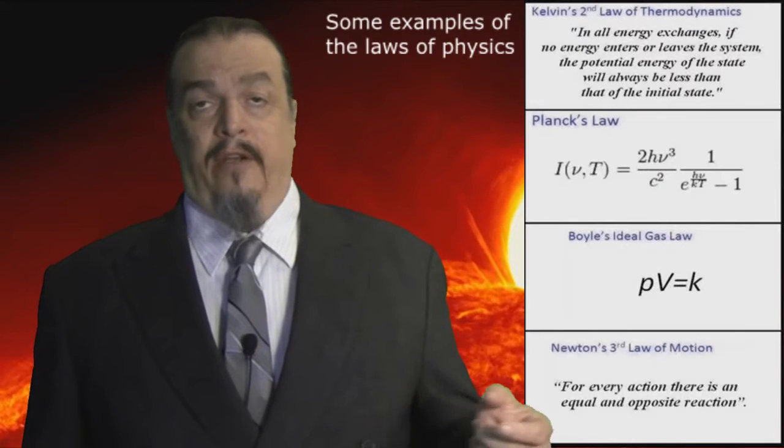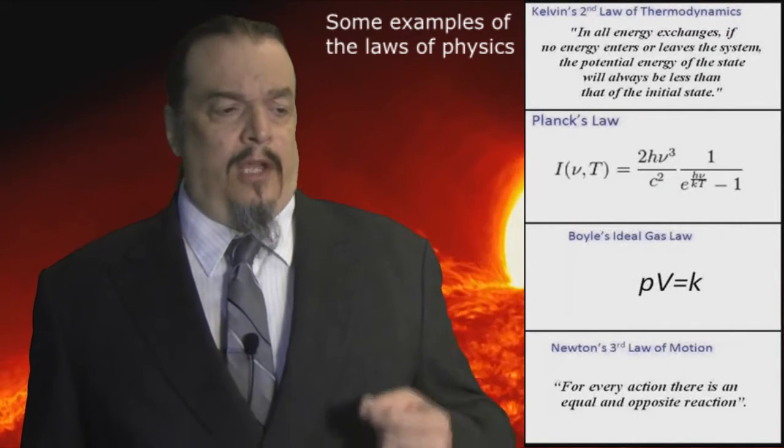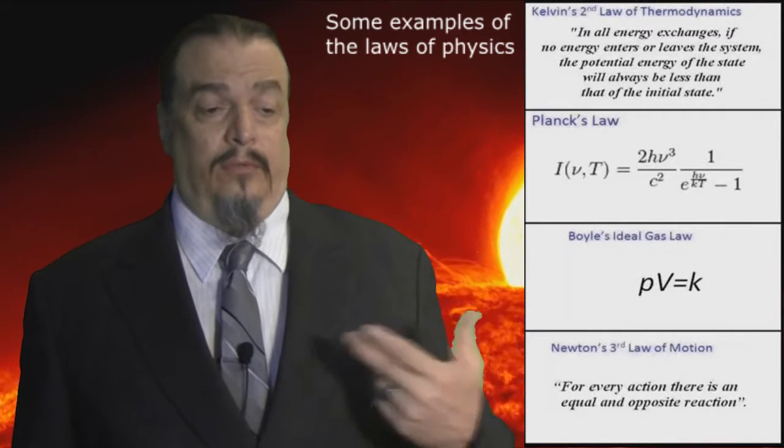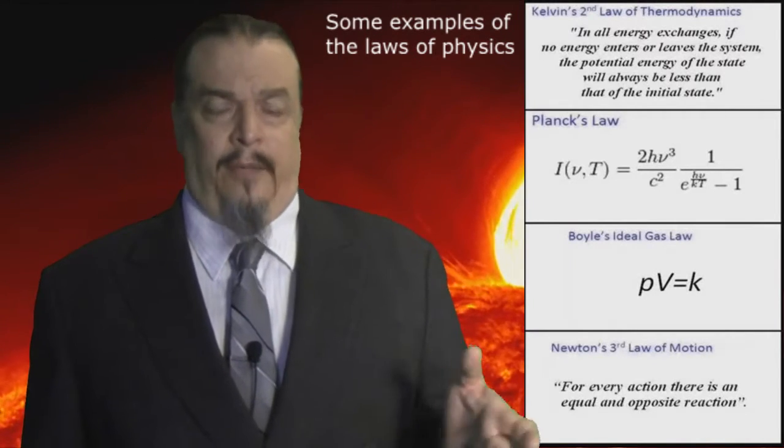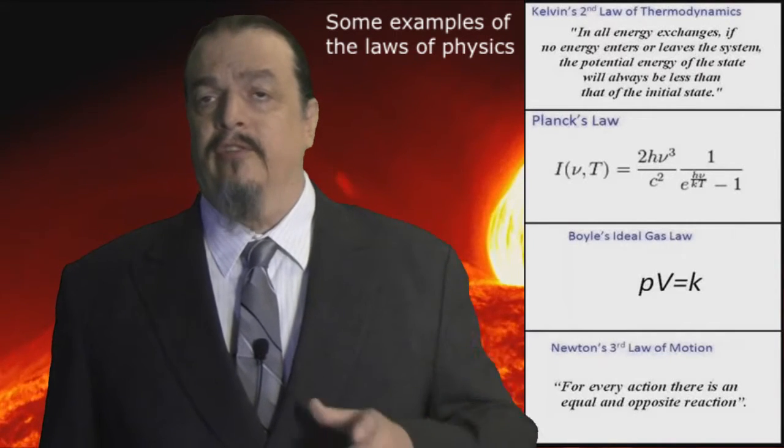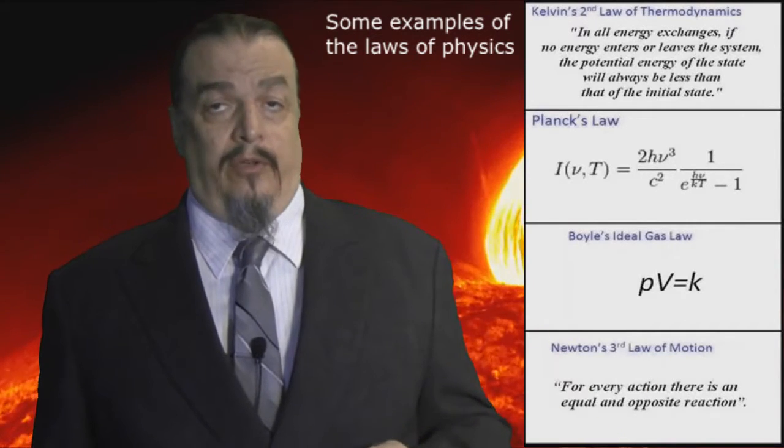A scientific law is a pattern observed repeatedly in nature. When most people think of laws, they think of the rules that governments make. However, what we call the laws of nature are actually observations expressed either as mathematic equations or simple summary sentences, which have always been shown to be true.